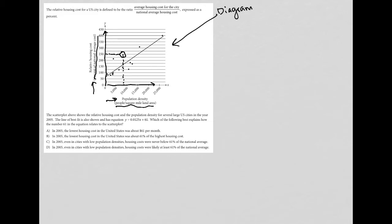The relative housing cost for a U.S. city is defined to be the ratio, expressed as a percent. The scatter plot shows the relative housing cost and population density for several large U.S. cities in 2005. The line of best fit is shown and has an equation. I always like to write down the equation: y = 0.0125x + 61.